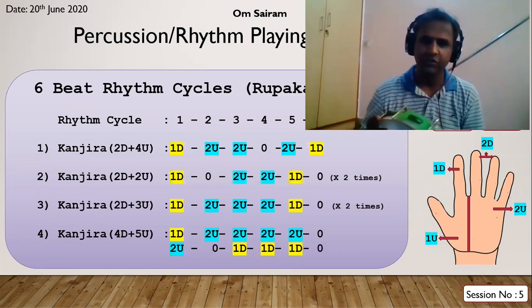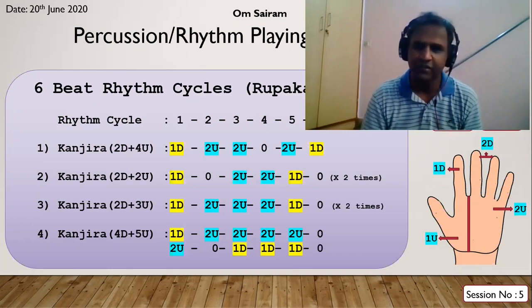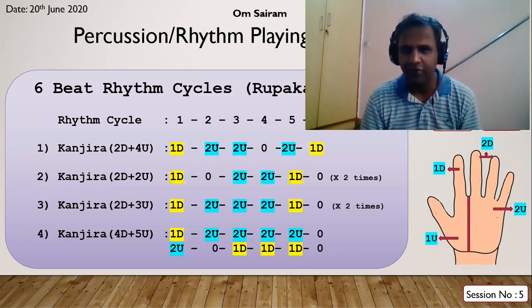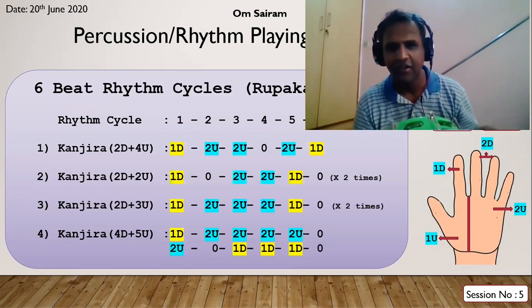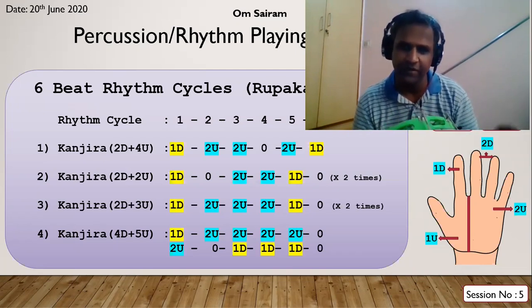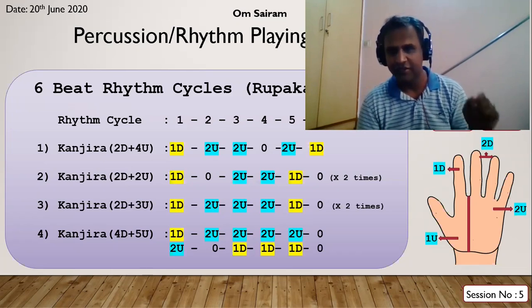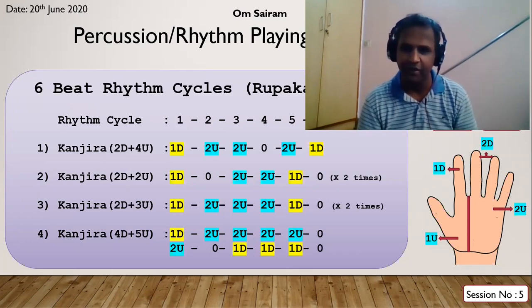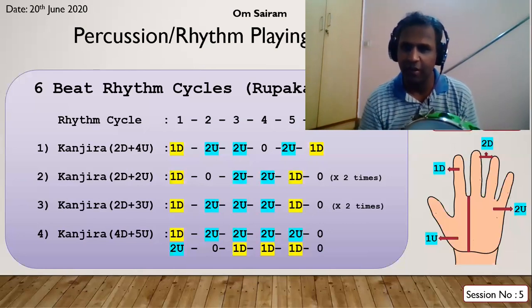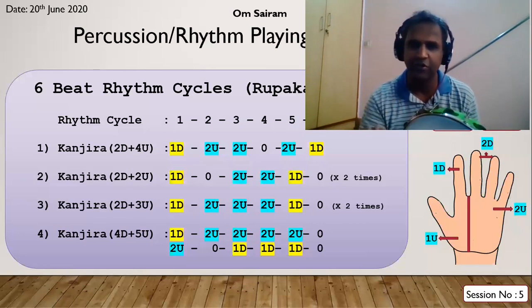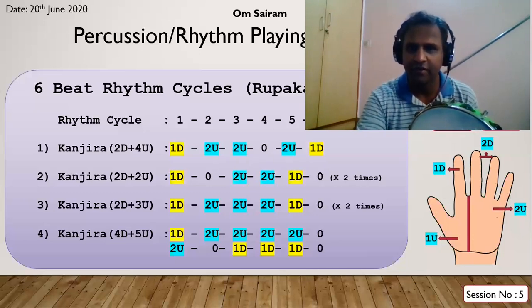These beats are all meant for six beat bhajans - don't experiment with them for eight beats. Don't use these beats for eight beat bhajans. When playing ganjira for a bhajan, first identify whether it is a six beat or eight beat - that will come only by listening. The more you listen to tabla players playing bhajans, the more you'll understand whether it's six beat or eight beat.